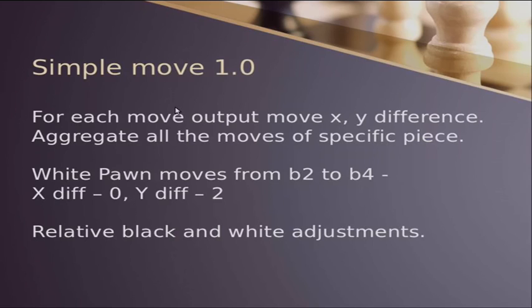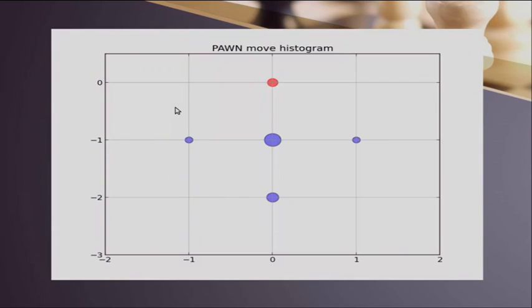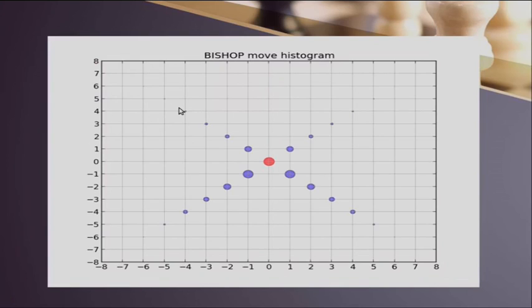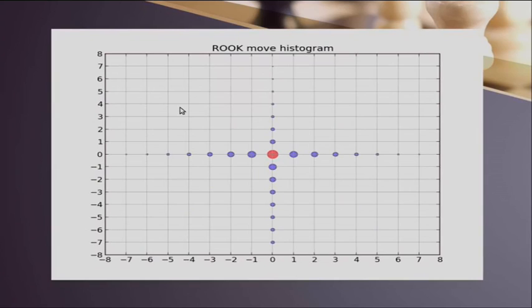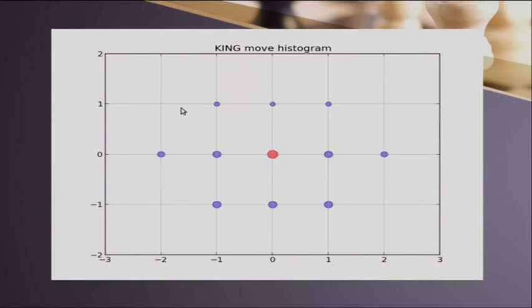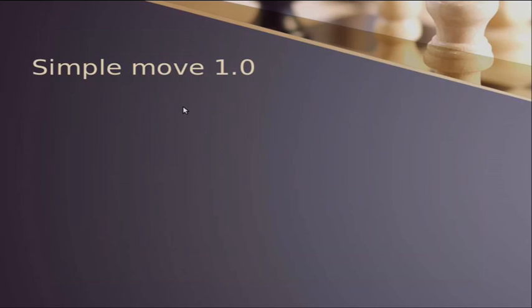And now you can see those histograms. This is a histogram for pawn - a pawn can move either one step forward, two steps forward, or one step forward into the side, to each side. This is how the bishop moves, this is how the rook moves, only straight. This is how a knight moves, it's kind of nice. The king, and you can see that the king can move one step to each side and the castling to one of the sides.